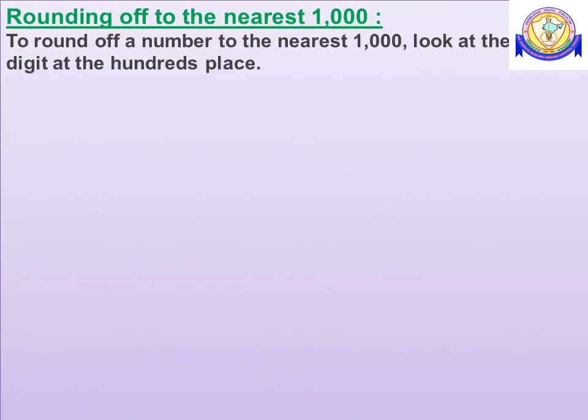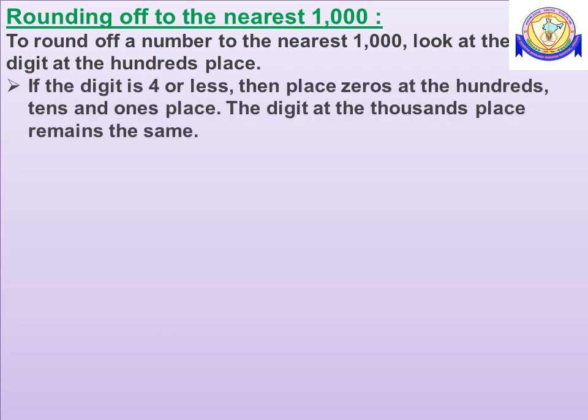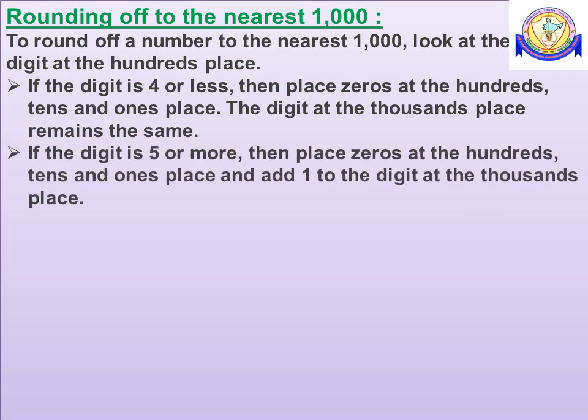Rounding off the number to its nearest 1,000. To round off a number to the nearest 1,000, look at the digit at the 100's place. If the digit at the 100's place is 4 or less, then place 0's at the 100's place, 10's place and 1's place, and the digit at the 1,000's place remains the same. If the digit at the 100's place is 5 or more, then place 0's at the 100's place, 10's place and 1's place, and add 1 to the digit at the 1,000's place.